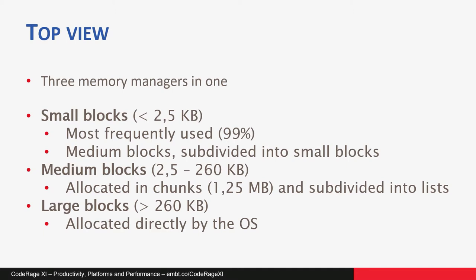Objects are served memory from the SmallBlocks manager. The Medium Blocks manager handles memory allocation from 2.5KB to 260KB. They are allocated in larger chunks and then subdivided in a linked list which serves memory. The Large Blocks manager handles memory allocations over 260KB. This kind of memory is directly allocated from the operating system. On Windows, this memory manager just calls the VirtualAlloc function.